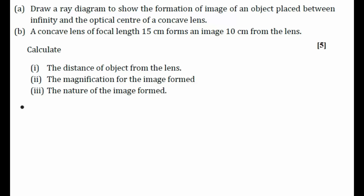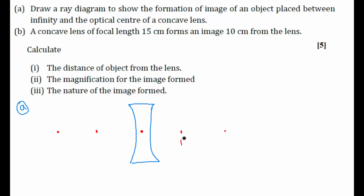What we need to do? We need to trace an image. They are using a concave lens, something like this. This is our concave lens which will have a pole, center of curvature on both sides, 2F1, F1, 2F2, F2. The principal axis will be the line joining all these points — this is our principal axis.